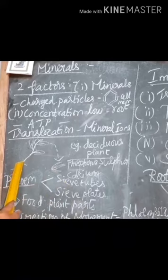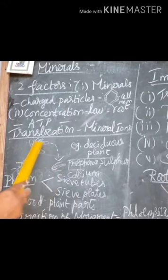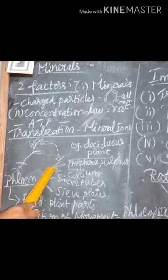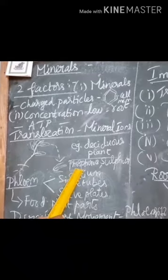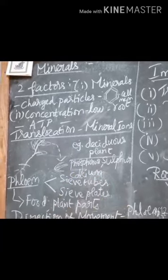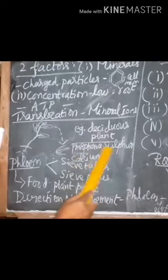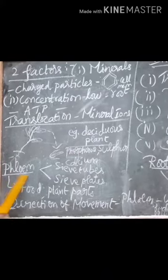Translocation of minerals: minerals are remobilized from older leaves to younger leaves, for example in deciduous plants. The minerals needed by plants — phosphorus, sulfur, nitrogen, and potassium — are easily mobilized, but calcium is not remobilized.